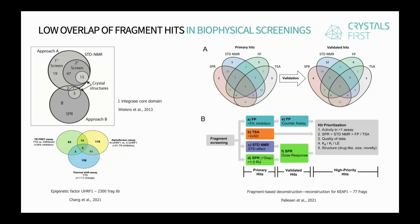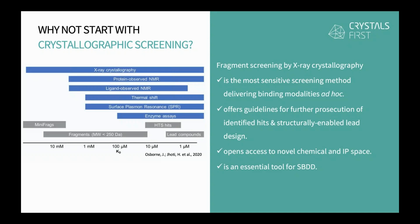There are some problems we've observed: when two biophysical methods are combined, the overlap between them may be very low. We've rather advocated from the beginning for a crystallographic fragment screen — the most sensitive method on the axis of sensitivity. It can detect both low-affinity and high-affinity binders, you get 3D data from the beginning, and you can immediately start modeling and exploring chemical spaces.